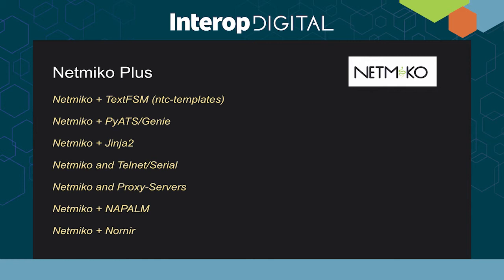You can also couple Netmiko with Jinja2, using Jinja2 templating to generate configs or parts of configs and then use Netmiko to deploy those configs. In addition to SSH, Netmiko supports legacy connections via Telnet, serial, and terminal servers, and you can use it with proxy servers if you need to bounce through them to reach your devices. NAPALM and Netmiko are coupled together, and Nornir and Netmiko have plugins so you can use Netmiko with Nornir.